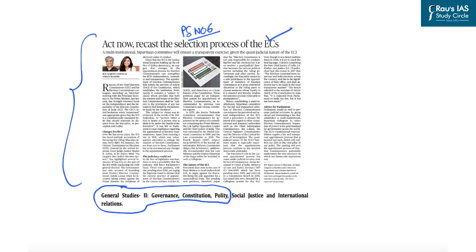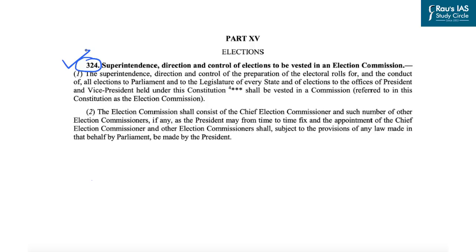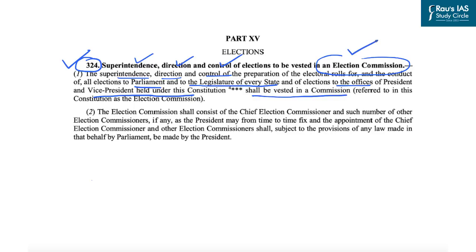Article 324 of the Indian Constitution provides that the superintendence, direction and control of elections shall be vested in an Election Commission. This covers preparation of electoral rolls and conduct of all elections to Parliament, state legislatures, and the offices of President and Vice President. State Election Commissions are separately appointed at the state level to conduct Panchayati Raj elections.